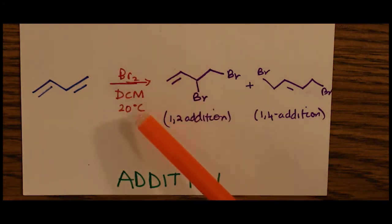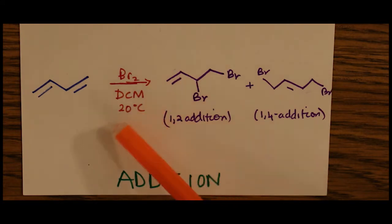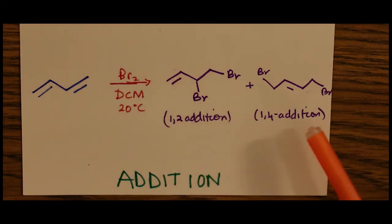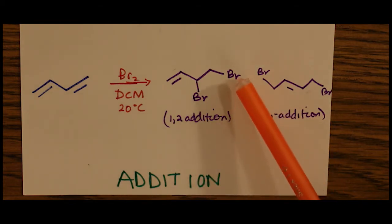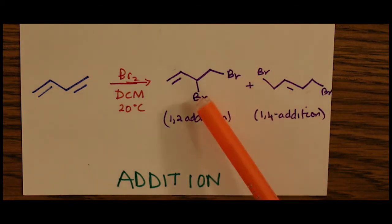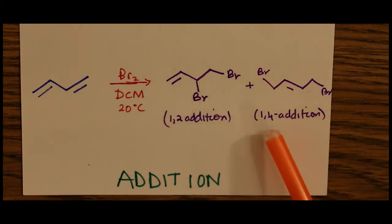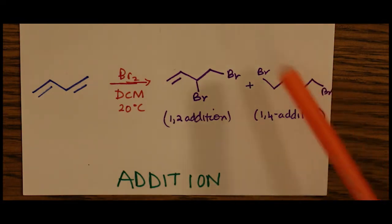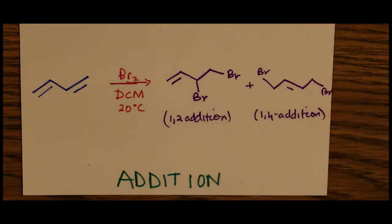In this reaction, specifically, we have bromine along with dichloromethane at 20 degrees Celsius to give us a mixture of two products: the 1,2-addition, where Br adds 1,2, and the 1,4-addition, where Br adds in the 1 and the 4 position in the aliphatic chain.